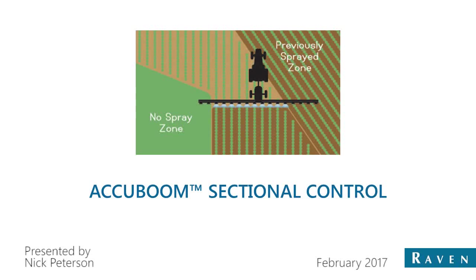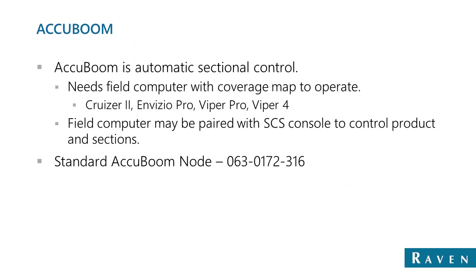Welcome to the Spring 2017 Raven AccuBoom sectional control webinar. I'm going to go over a couple of settings for the Raven AccuBoom system. AccuBoom is Raven's automatic sectional control. The basic requirements needed for AccuBoom include a Raven field computer, a coverage map, and GPS to operate.